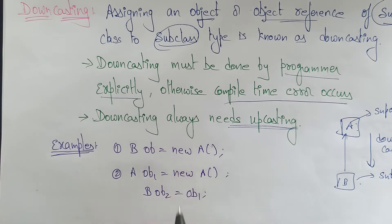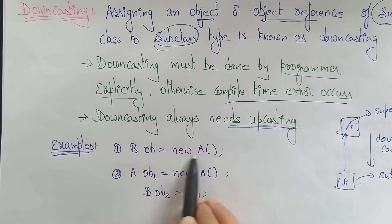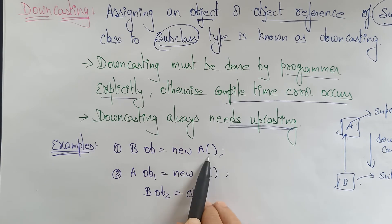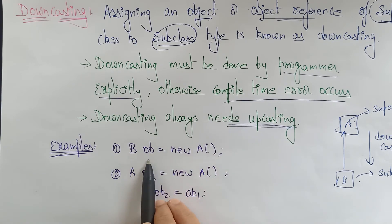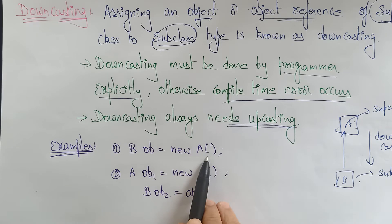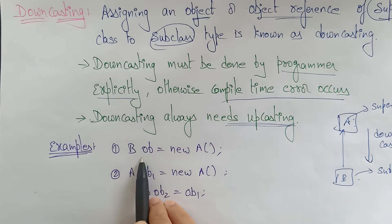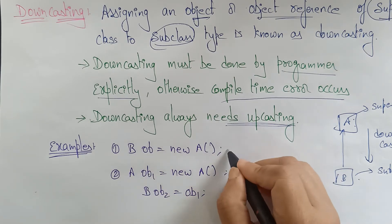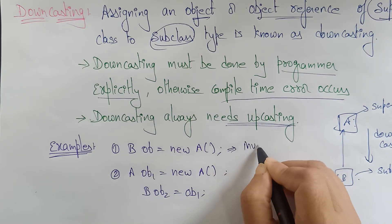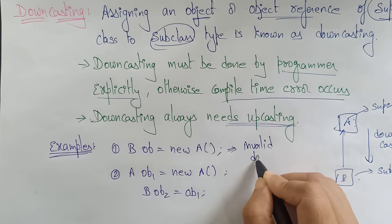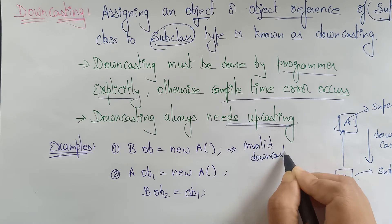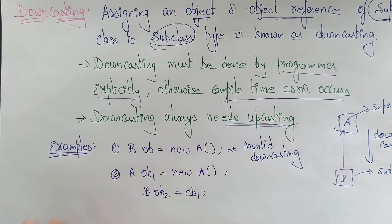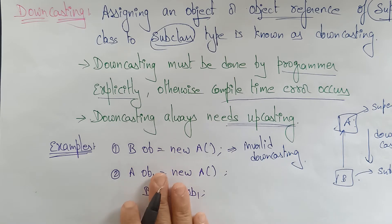Let's see an example of downcasting. Here an object of A is created and that will be assigned to the object reference of B class — meaning assigning an object of superclass to subclass. Is it valid? No, it is invalid downcasting. This is not possible, you can't perform this operation.